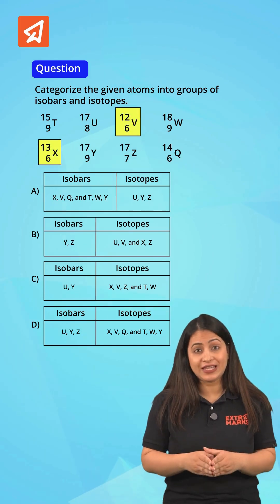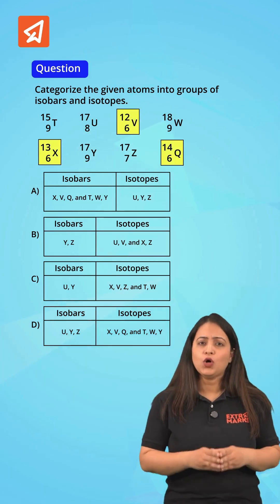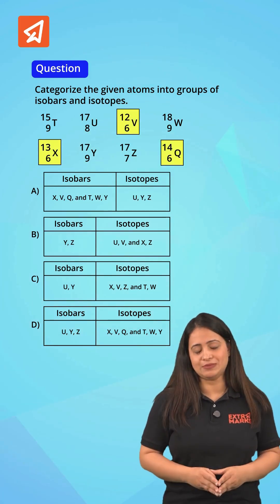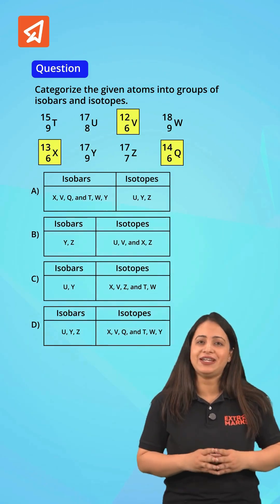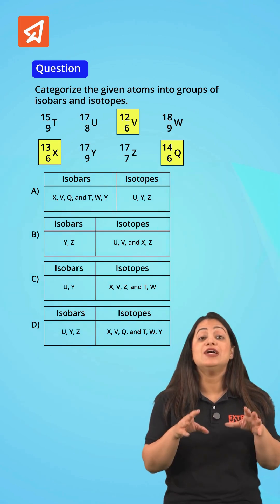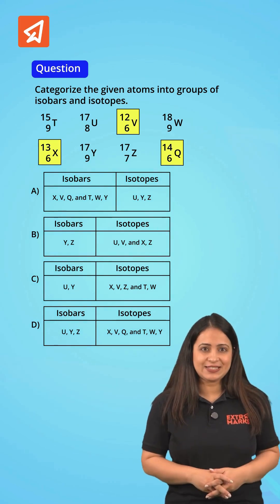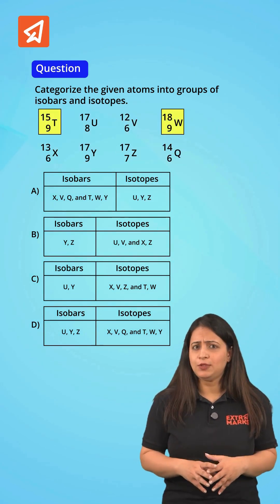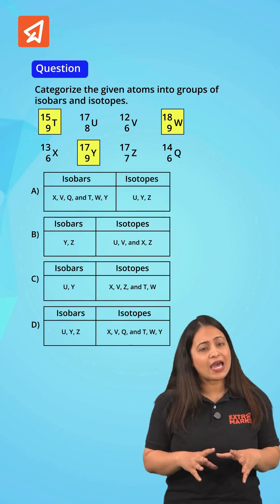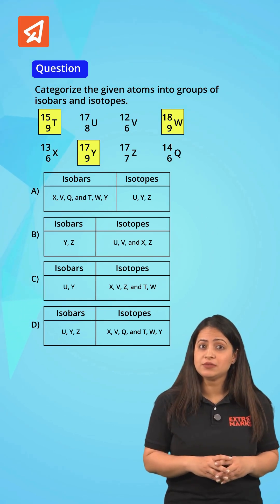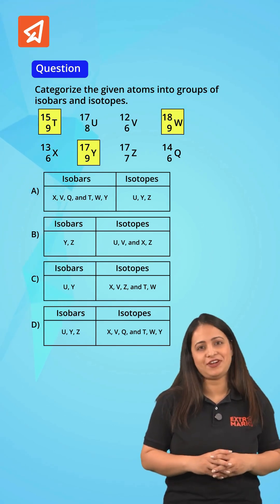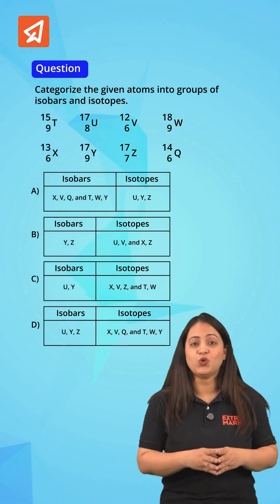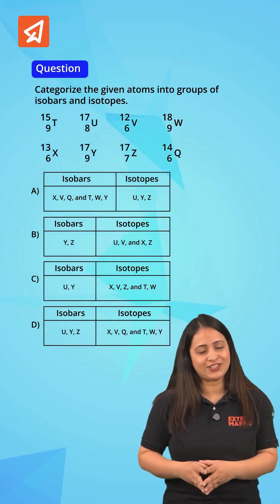Whereas X, V, and Q all three have the same atomic numbers with different numbers of neutrons, so they are considered isotopes. Similarly, T, W, and Y have the same atomic numbers with different mass numbers, so they are also isotopes of each other.